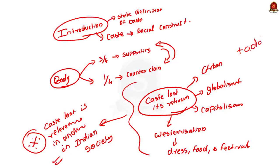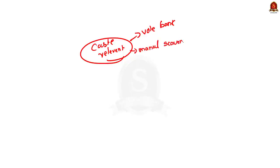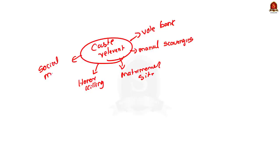Now moving on to how caste is still relevant in understanding Indian society. Points you can mention include: vote bank politics; rise of various caste-based political parties and organizations; the menace of manual scavenging still prevalent in society; rise of caste-based matrimonial sites; prevalence of honor killing and khap panchayats; though caste relevance has reduced in urban areas, it has not reduced in rural areas; caste-based groups on social media like Facebook and Instagram; and Indians migrating to foreign nations bringing their caste with them — you can cite examples of caste-based organizations in the USA.